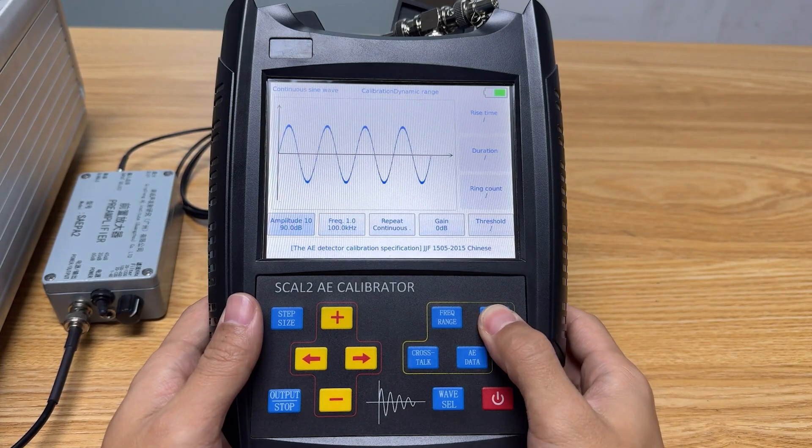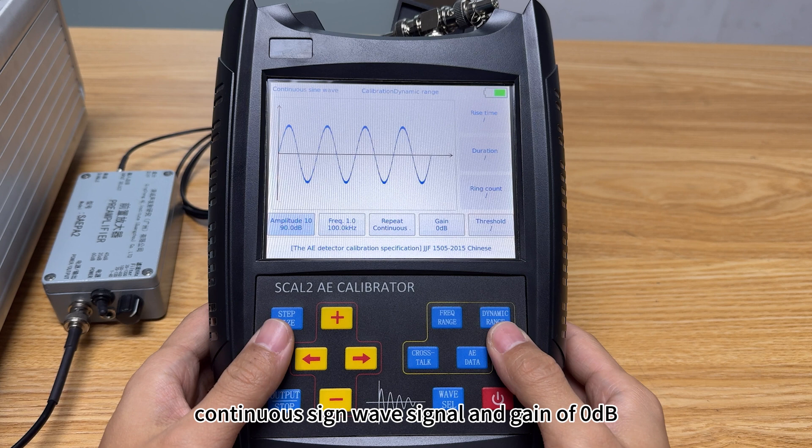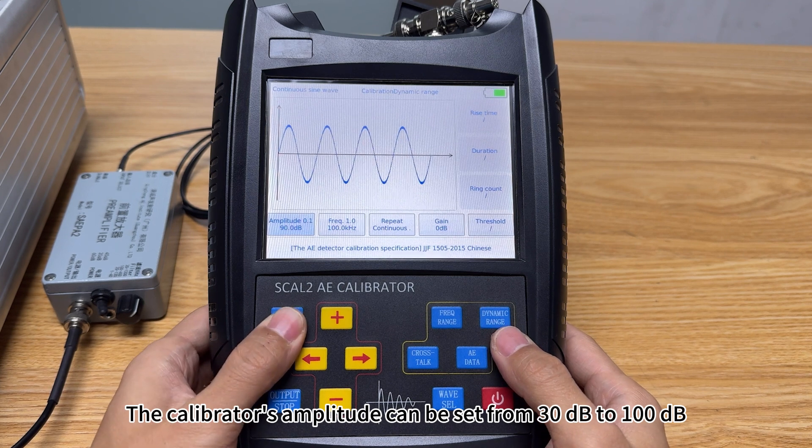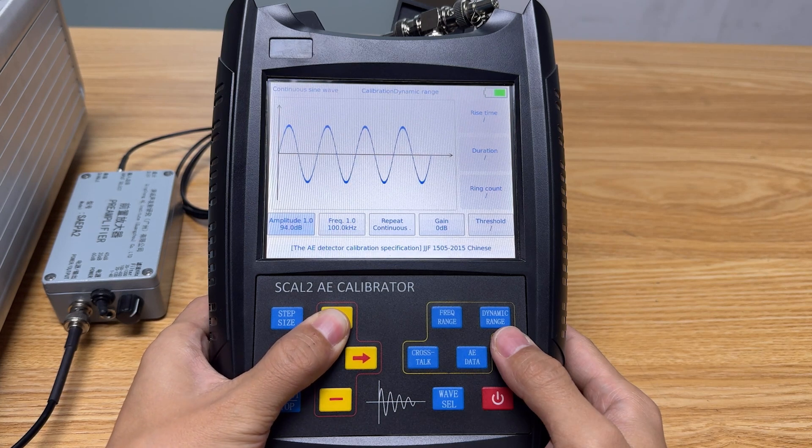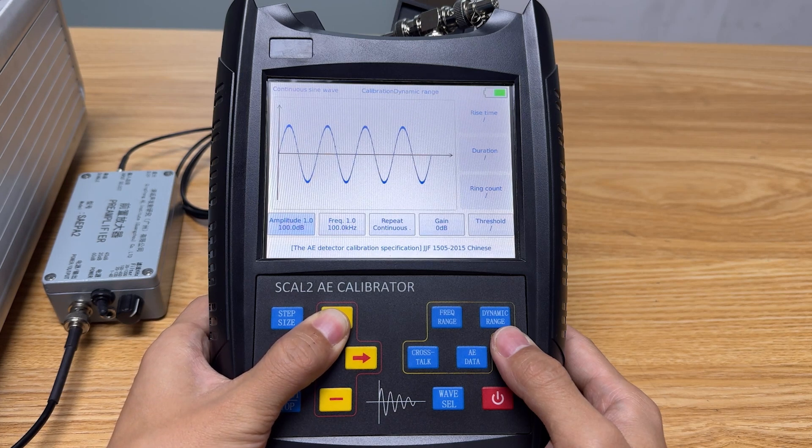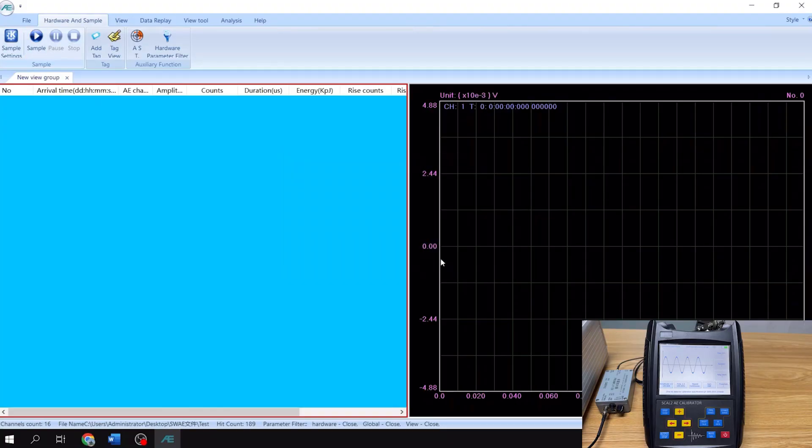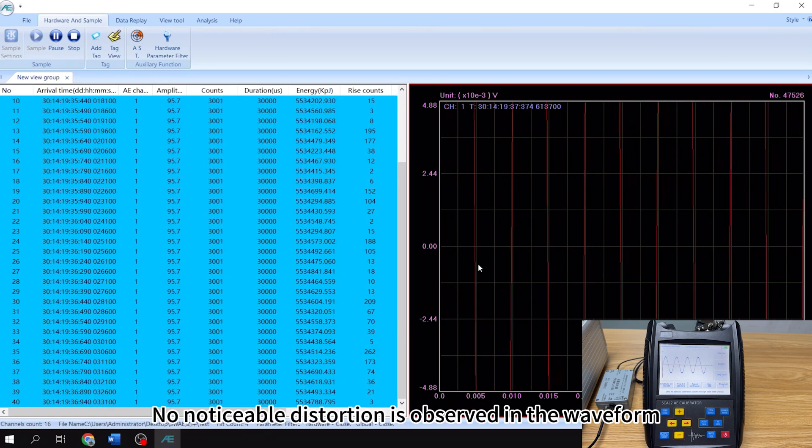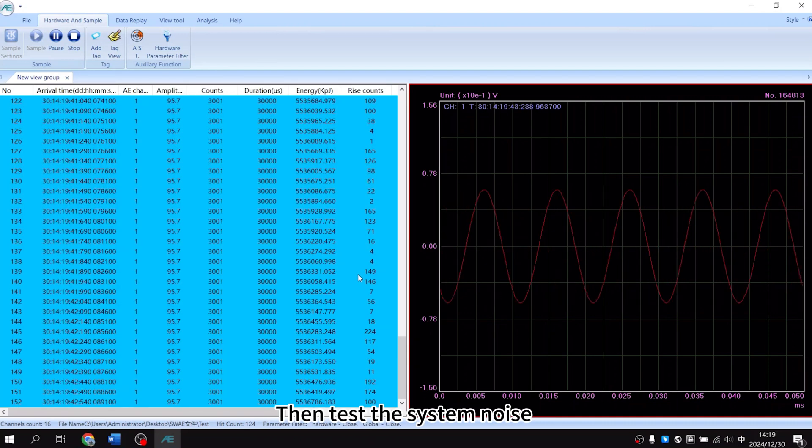Press Dynamic Range. The default settings are an amplitude of 90 dB, frequency of 100 kHz, continuous sine wave signal, and gain of 0 dB. The calibrator's amplitude can be set from 30 dB to 100 dB. We adjust the signal amplitude to 100 dB and press output. No noticeable distortion is observed in the waveform collected by the AE instrument.